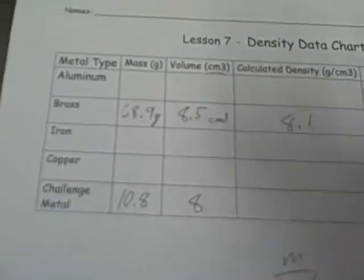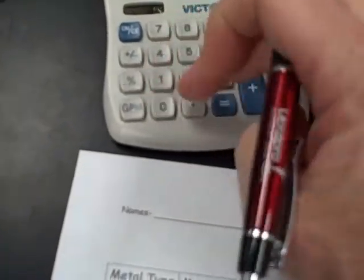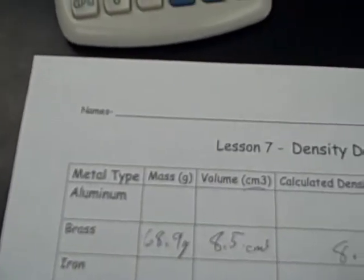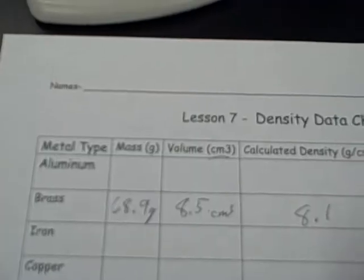Now remember, to calculate density, you take mass divided by volume, so all you do is take 10.8 grams divided by 8 cubic centimeters equals 1.35 grams per cubic centimeter is its density.